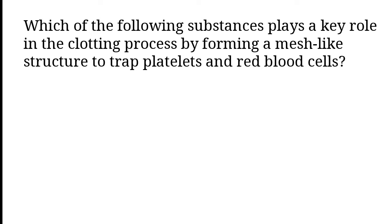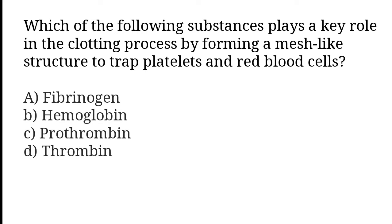Which of the following substances plays a key role in the clotting process by forming a mesh-like structure to trap platelets and red blood cells? Fibrinogen, hemoglobin, prothrombin, thrombin.